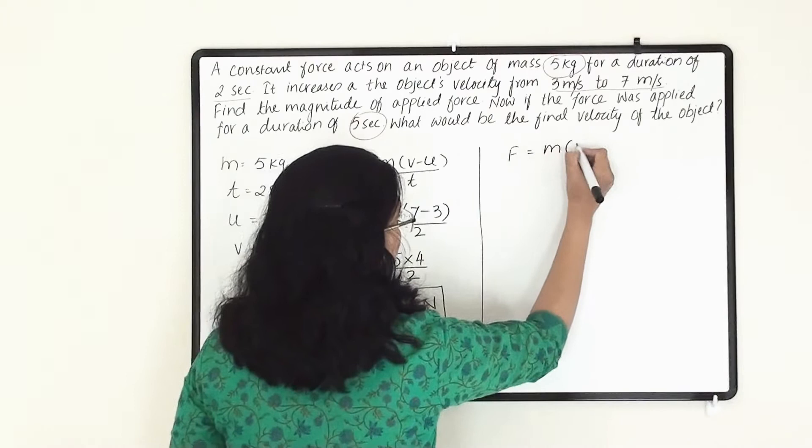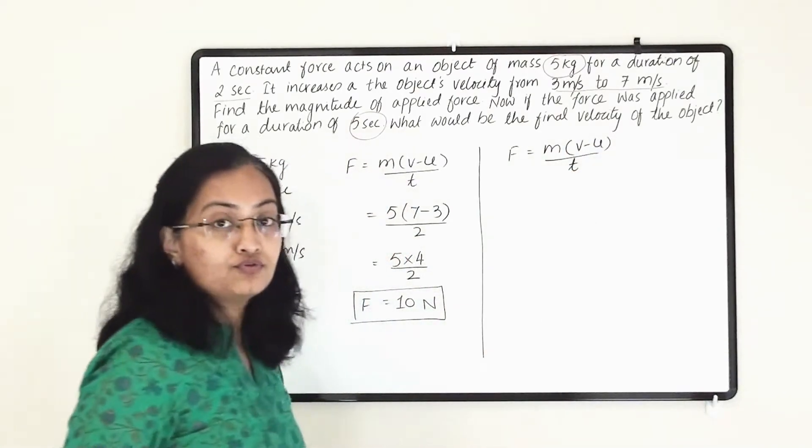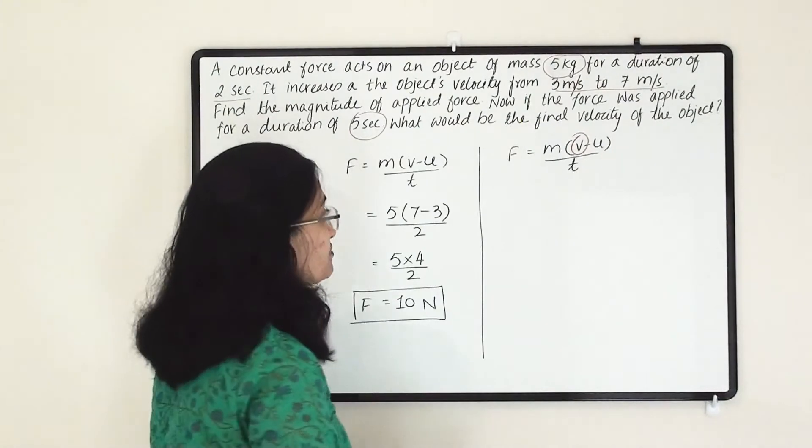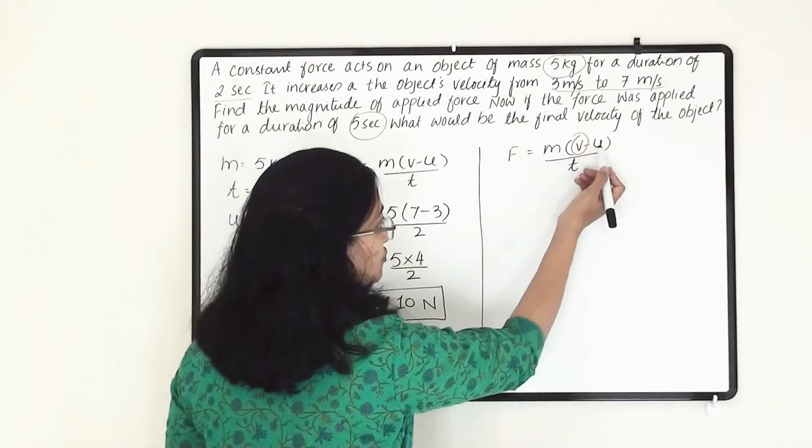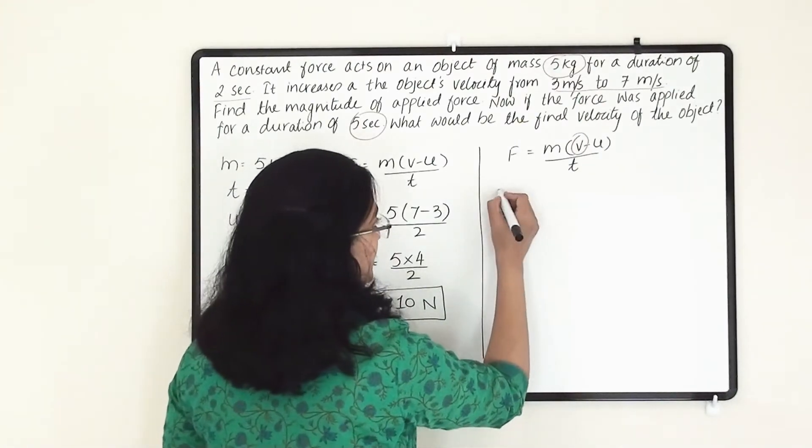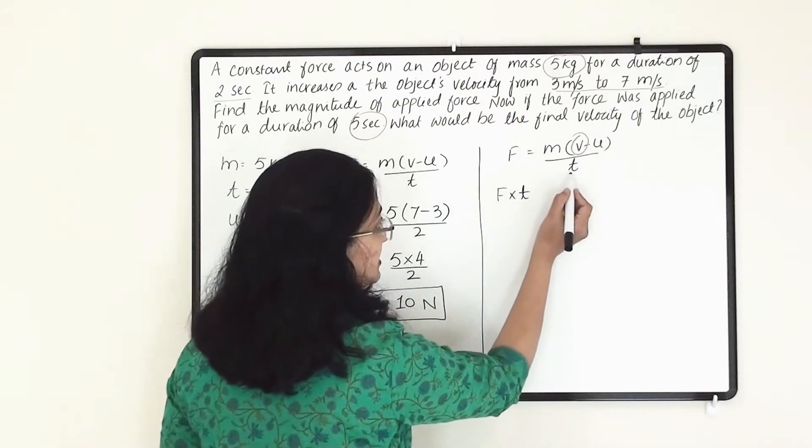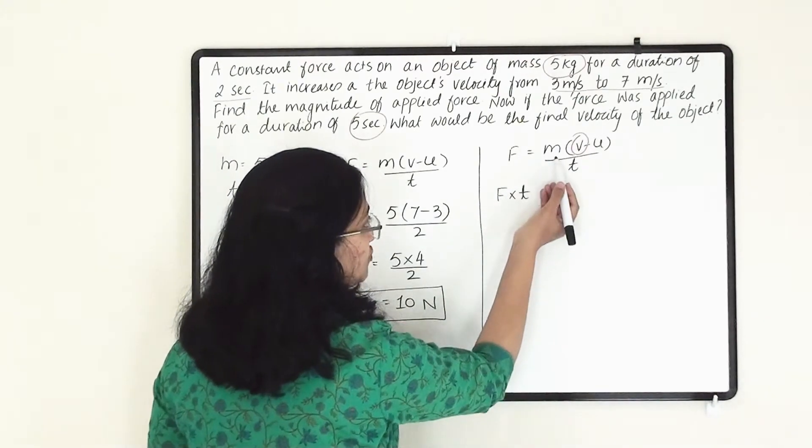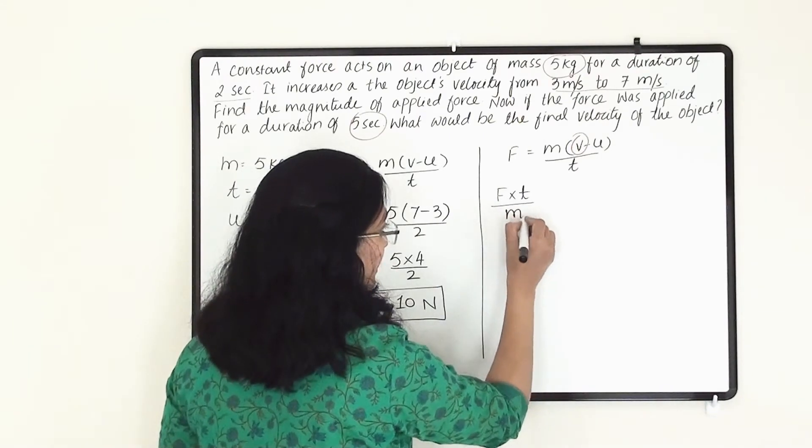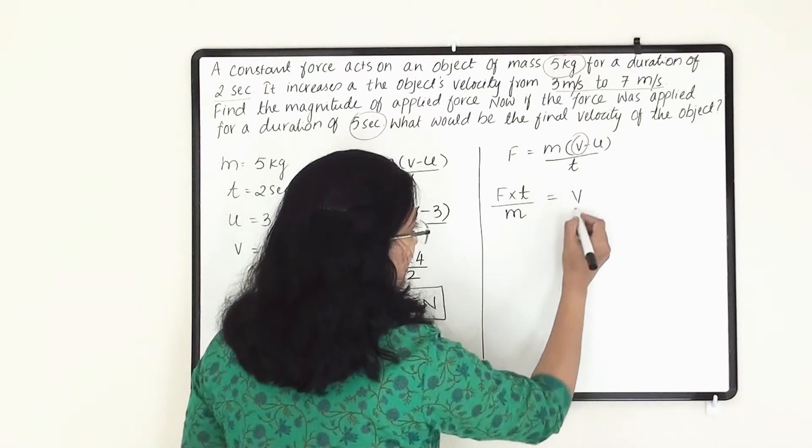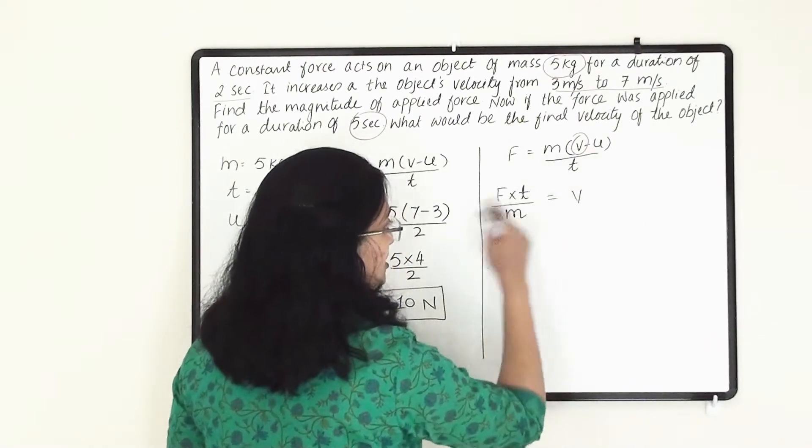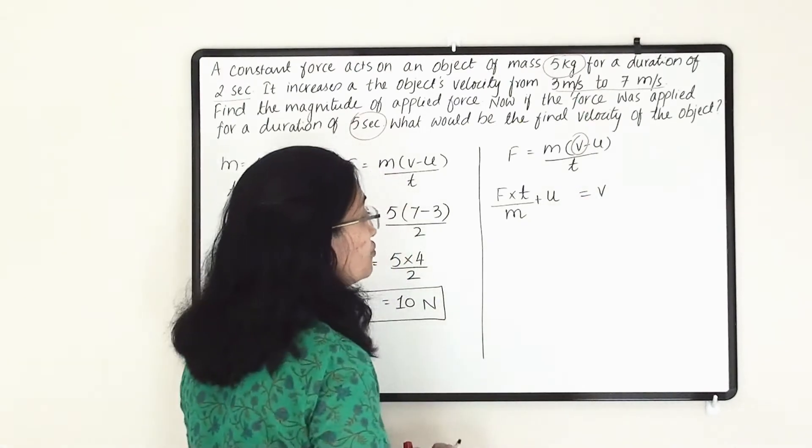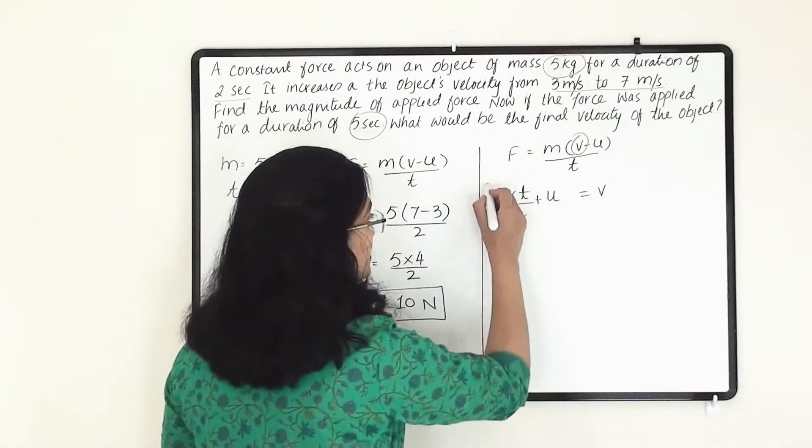So let us write, what will be the final velocity? We have to find out the final velocity. F equals to M times V minus U divided by T. Here we have to find out V. So we have to make equation with respect to V. So let us take all the other things, that is M, U and T, towards the left hand side. So F into T, because here it is in denominator, when we change side it will go to numerator. Now M is in numerator, it will go to denominator when changing side. Now we are getting V and minus U is there. So when this minus U changes side it will become plus U. So this is our new formula according to this numerical.